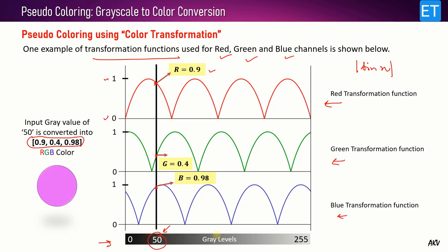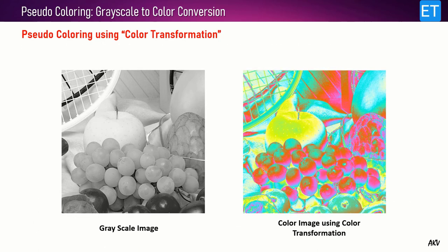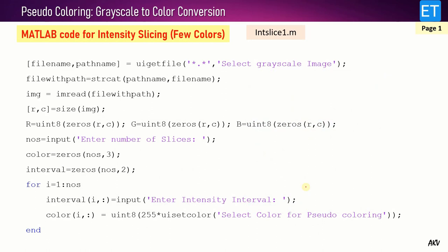All intensity levels of the input image can be converted to corresponding RGB triplets by drawing these vertical lines, which cut the RGB transformation functions at certain points. This is the outcome of the color transformation method — the grayscale image is converted into a color image. Now let's look at the MATLAB code implementing these methods, starting with the first file for intensity slicing.